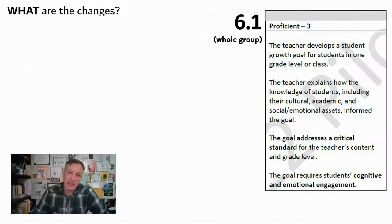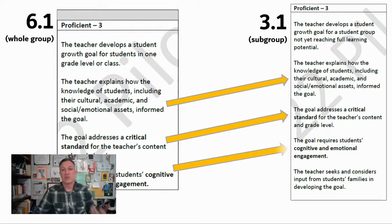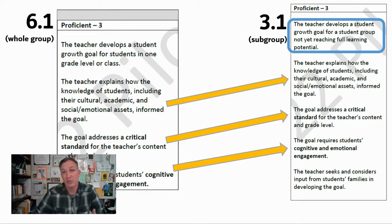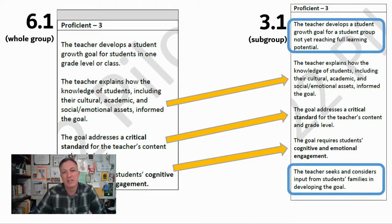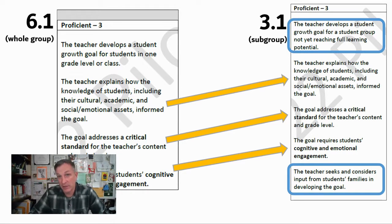We've looked briefly at the 6.1 whole group rubrics — it's important to recognize that those form a template for the other parts. For 3.1 goal setting, you'll notice most of the language is verbatim the same. The difference is that for 3.1, you're focusing on developing a growth goal for a student group that's not yet reaching full potential. Additionally, the teacher seeks and considers input from students' families in developing the goal — because this is about individualized or small group goal setting, this rubric folds in that important layer of the team of adults wrapping around a student.